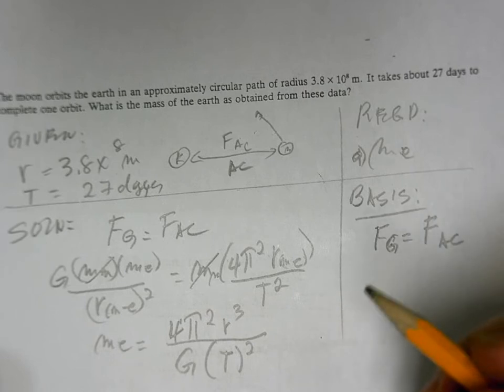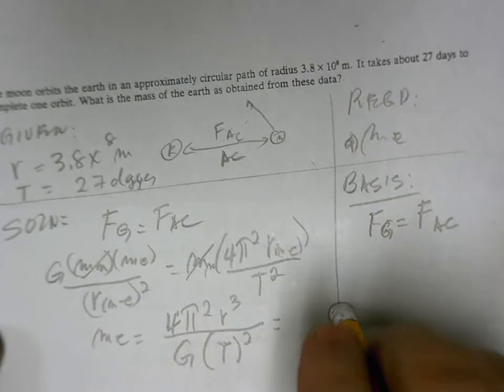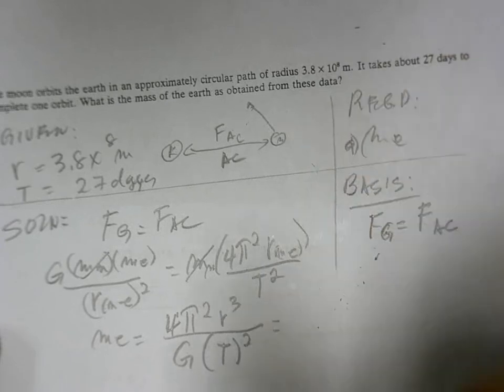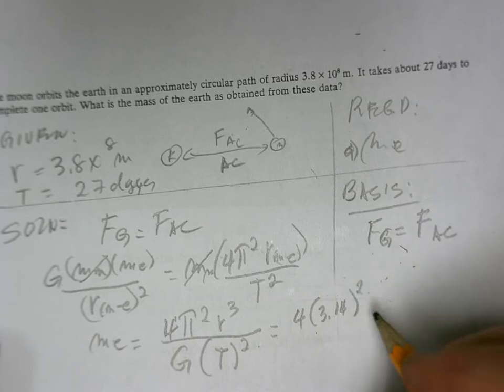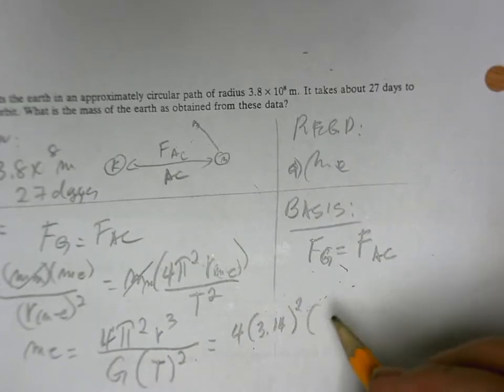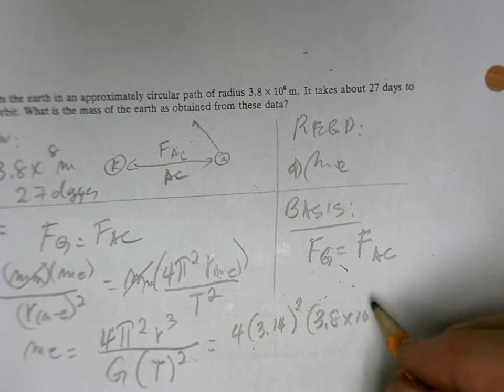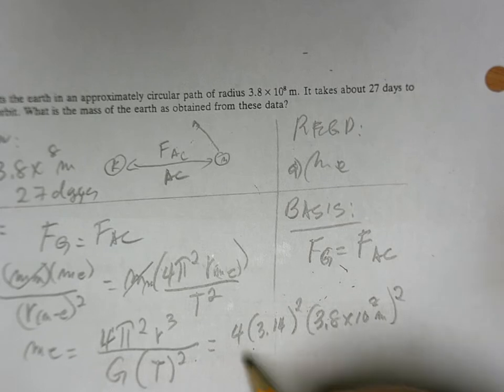You just have to be consistent with your units. 4 times 3.14, there are no units so far. Square that. The radius, 10 to the 8 meter and cube that.